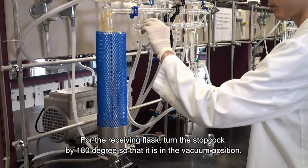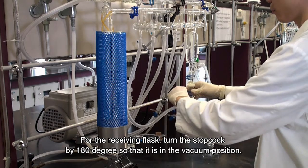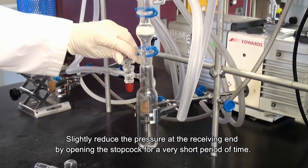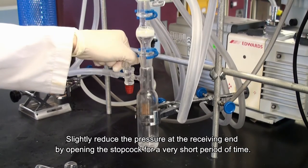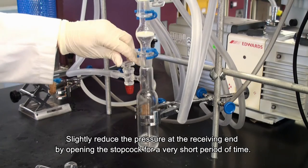For the receiving flask, turn the stopcock by 180 degrees so that it is in the vacuum position. Slightly reduce the pressure at the receiving end by opening the stopcock for a very short period of time to speed up the filtration.